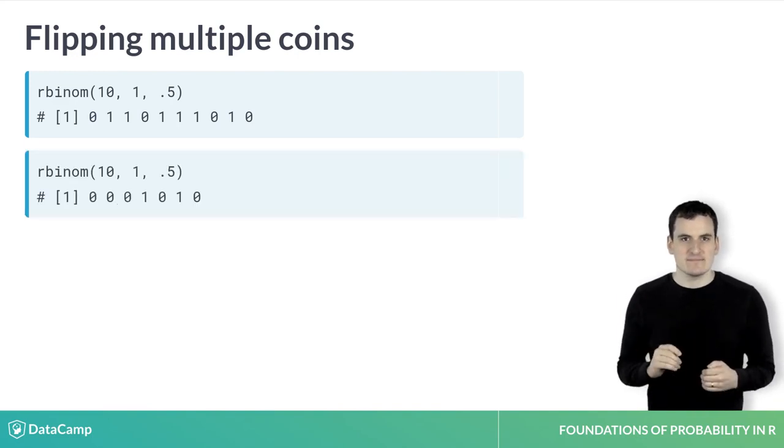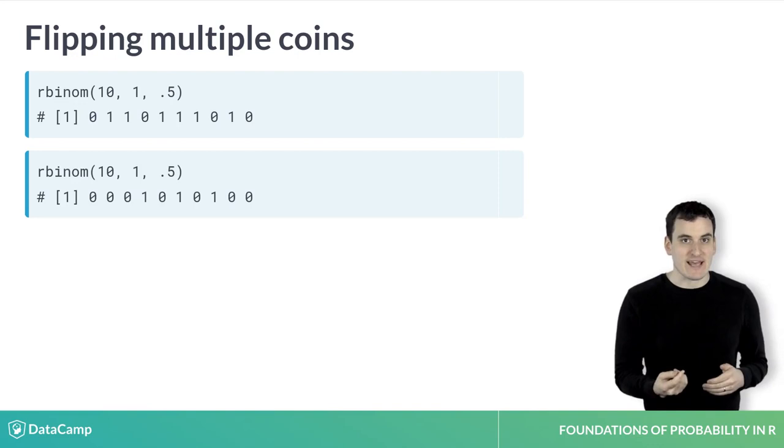Let's run that again. This time, the 10 flips resulted in only 3 heads and 7 tails. Each time we do a set of flips, we'll see a different outcome.